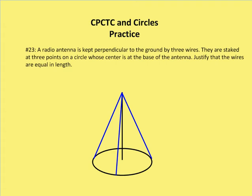Okay, so just as a reminder, CPCTC means corresponding parts of congruent triangles are congruent, and we also learn in circles that all radii of a circle are congruent. So the question here asks us,